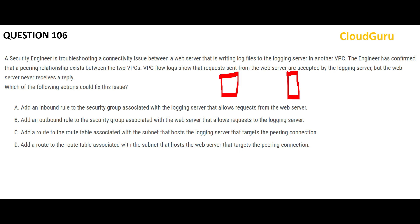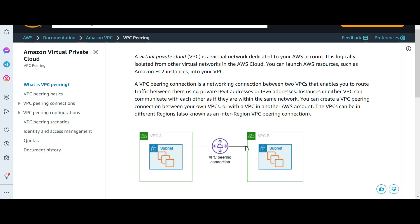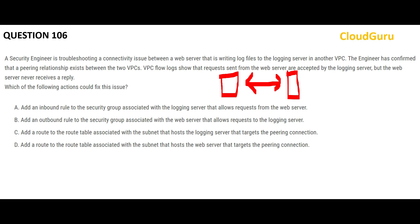The next question involves two VPCs that are peered using VPC peering — you can pause to read it carefully. In a nutshell, VPC peering is simply a connection between two VPCs. There is a communication problem to fix: the web server sends data to the logging server, but the logging server never sends a reply — no acknowledgement comes back to the web server.